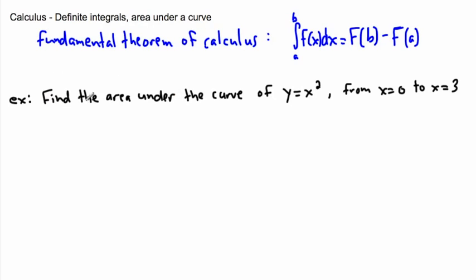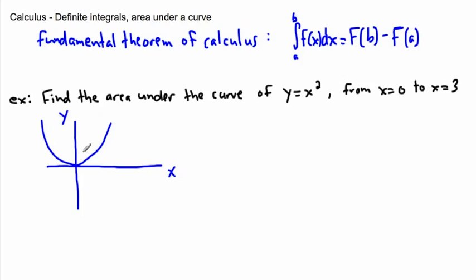This is actually pretty cool — we can now find the area under the curve y equals x squared. If we draw that, we know what x squared looks like: it's a function that goes like this. From x equals 0 to x equals 3 — let's say this is 3 — it would be this area right here. It may look sort of like a triangle, but it's not exactly because it's curvy. What I love about this is you can actually find the exact value for the area under this curvy curve using the fundamental theorem of calculus.